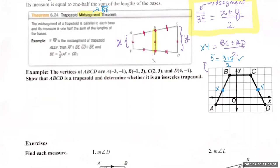On the actual example, they give you the vertices and say: show that ABCD is a trapezoid and determine whether it's an isosceles trapezoid. To show it's a trapezoid, I need to confirm one set of sides is parallel. The slope of BC is zero — it's a flat horizontal line. The slope of AD is also zero. Therefore BC is parallel to AD, so we have one set of parallel lines.